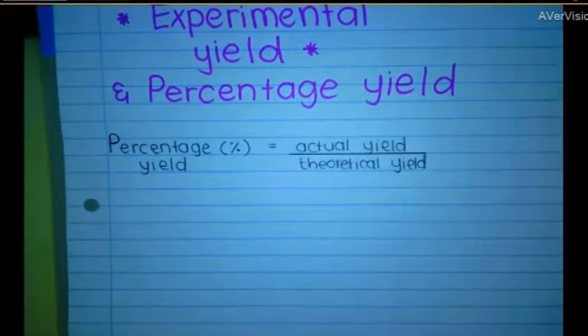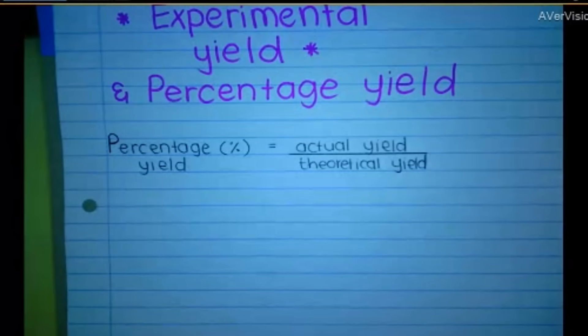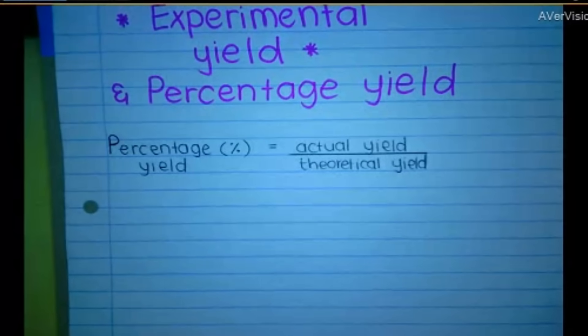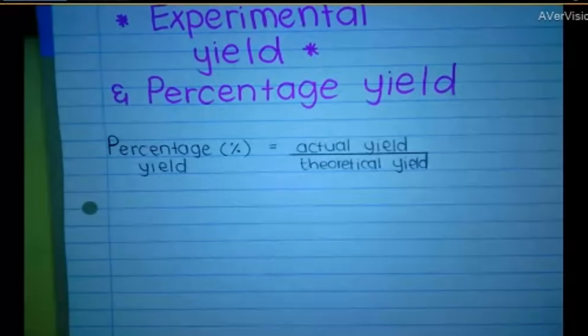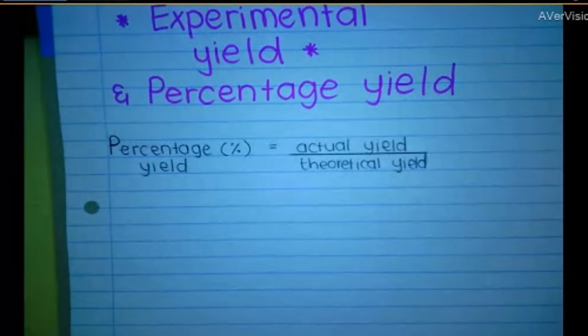So we have a theoretical yield that we start with. So we think we're going to get 50 grams of, I don't know, sodium hydroxide. But then we actually do the experiment and we actually weigh out the product and we get 25 grams. Okay, not 30.